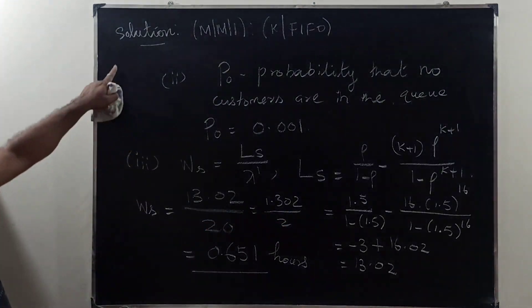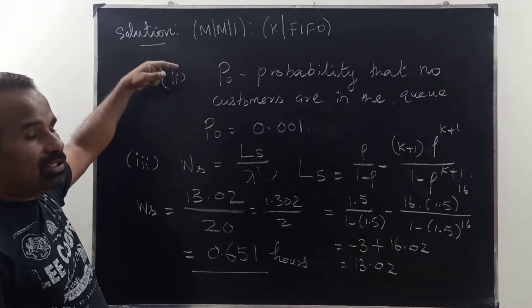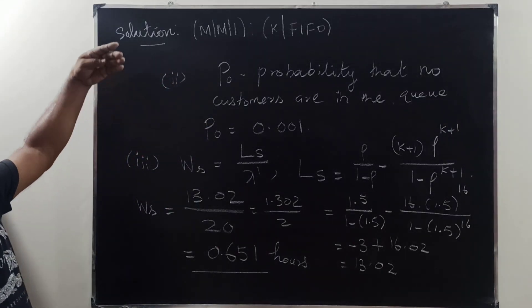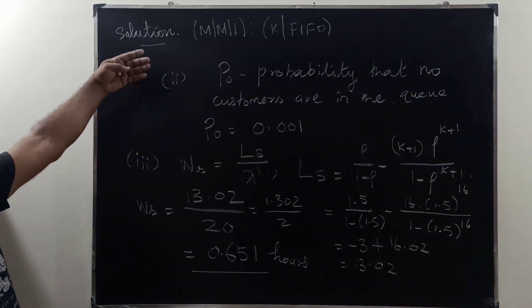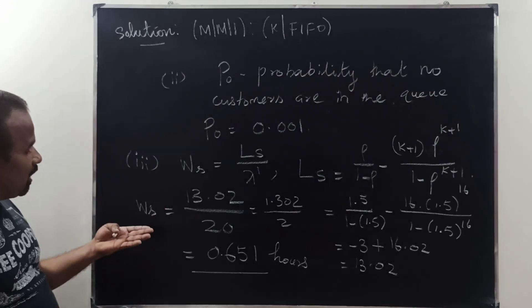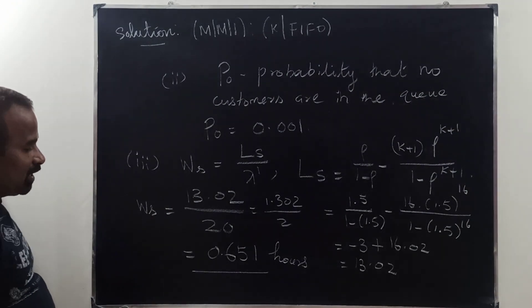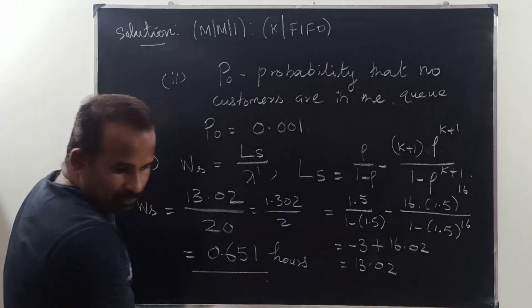So therefore, what we have seen: P0, the effective arrival rate, and the waiting time of the customer. Thank you.